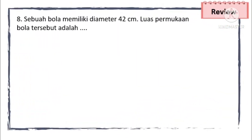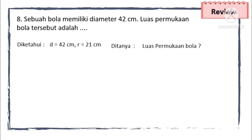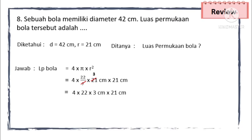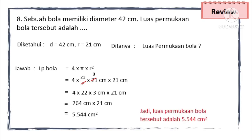Yang terakhir: sebuah bola memiliki diameter 42 cm. Luas permukaan bola tersebut adalah berapa? Diketahui diameternya 42 cm, berarti jari-jarinya setengah dari diameter yaitu 21 cm. Ditanyakan luas permukaan bola. Jawab: luas permukaan bola = 4 × π × r². Kita masukkan: 4 × 22/7 × 21 cm × 21 cm. 21 dibagi 7 = 3, maka 4 × 22 × 3 × 21 cm = 264 cm × 21 cm. Hasil akhirnya 5.544 cm persegi. Jadi, luas permukaan bola tersebut adalah 5.544 cm persegi.